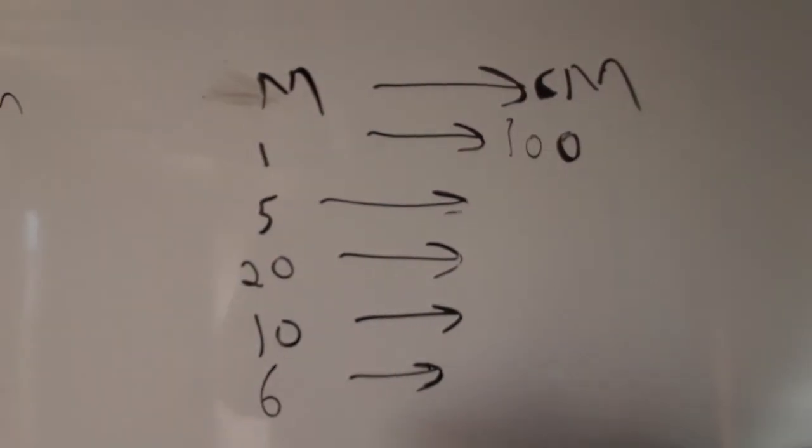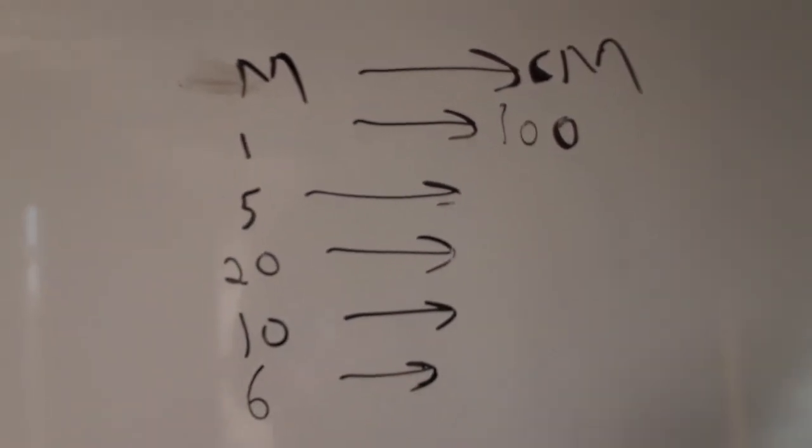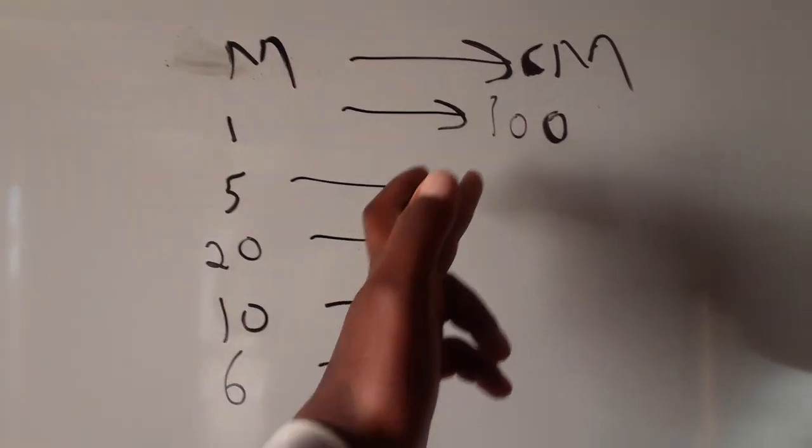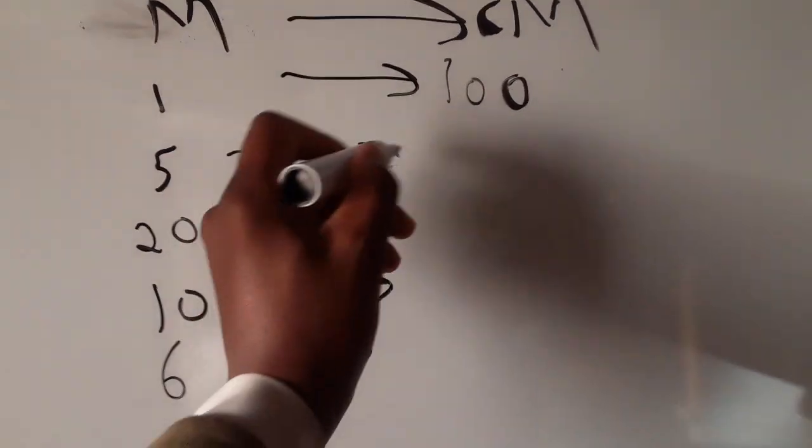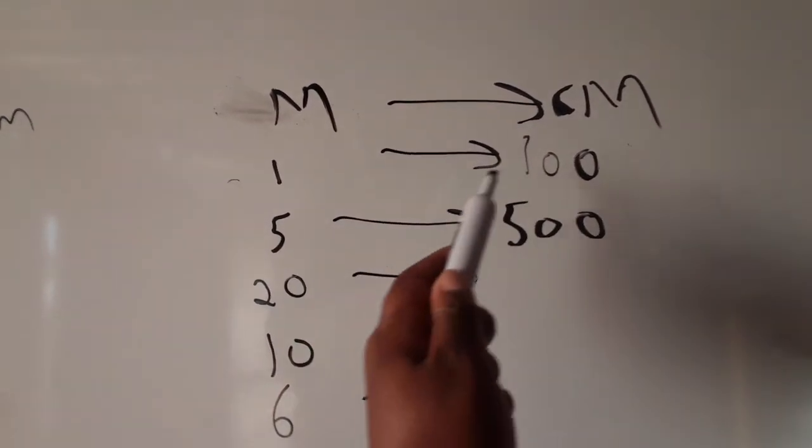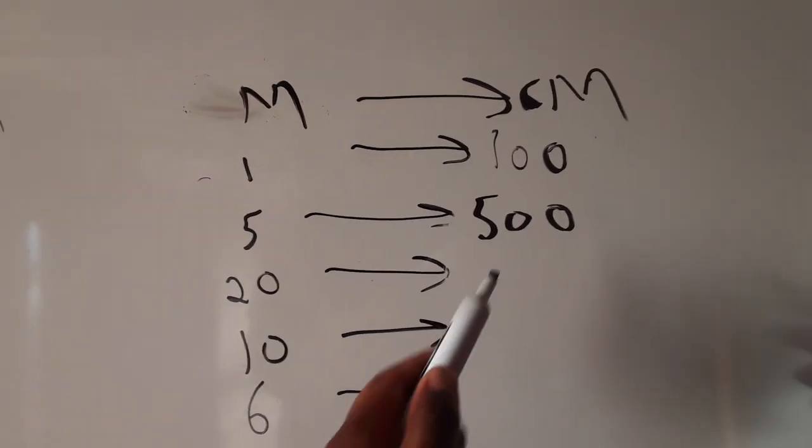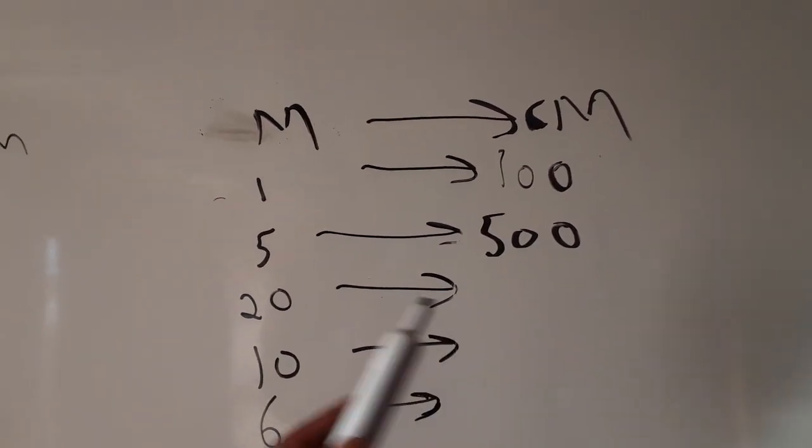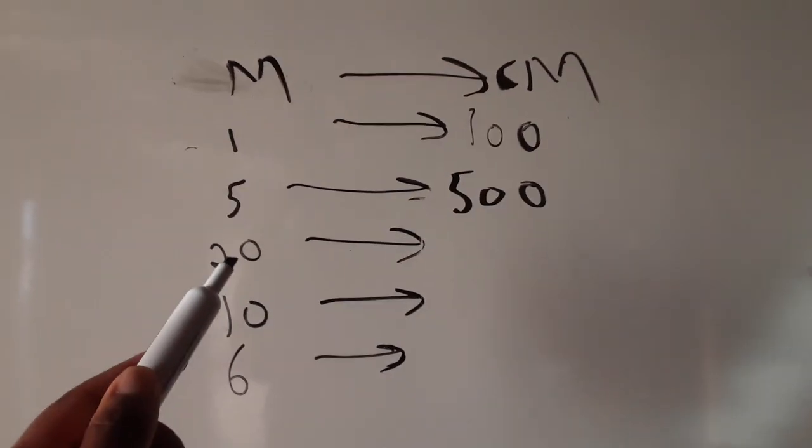We have 5 meters. It equals how many centimeters? We'll say 5 times 100, which is going to give us 500. Because 1 meter equals 100, so if we have 5, we're going to multiply 5 by 100, then we get 500. So 500 centimeters equals 5 meters.